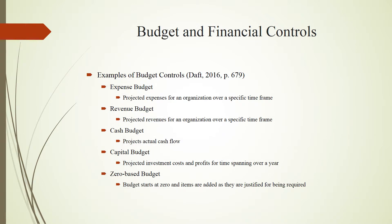There are many examples of budget controls, including expense budgets, revenue budgets, cash budgets, capital budgets, and zero-base budgets. Expense budgets include actual and predicted expenses the business may face. Revenue budgets include actual and predicted incomes. Cash budgets predict the cash on hand for a short period of time to ensure the business can meet obligations. Capital budgets take into consideration major investments like buildings and equipment and their depreciation. Zero-base budgets start at a zero balance, are built up as items are added and justified, which helps eliminate wasteful spending.